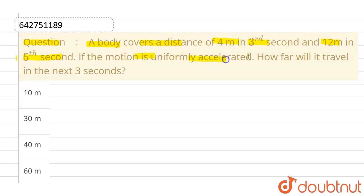If the motion is uniformly accelerated, how far will it travel in the next 3 seconds? The given options are 10 meter, 30 meter, 40 meter, and the last option is 60 meter.